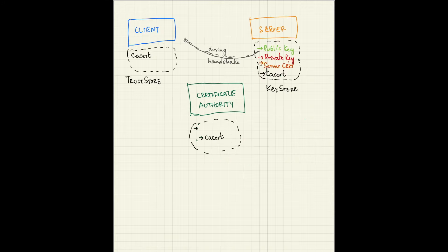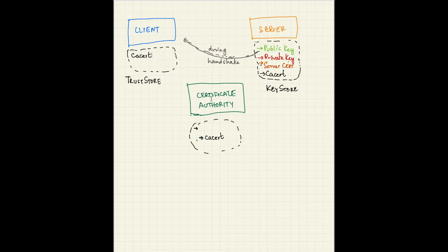Let's learn about what a trust store and key store are and how this mechanism works in real time. The client has a trust store, which is a lightweight store for encryption information. It stores the certificate of the CA itself, so the client can trust the CA. The server holds different kinds of keys in the key store: a public key given to the client during the handshake, a private key used to decrypt information sent by the client, and a server certificate to verify its authenticity with the client.